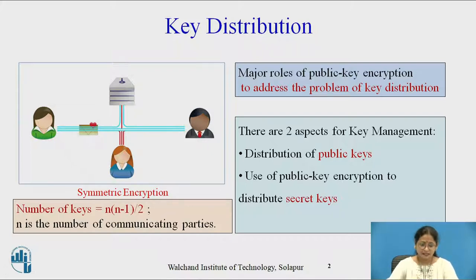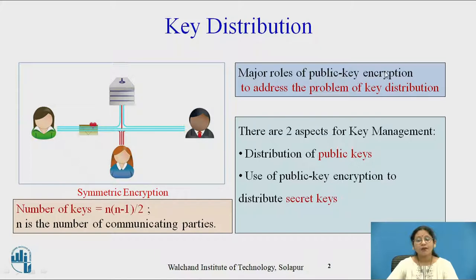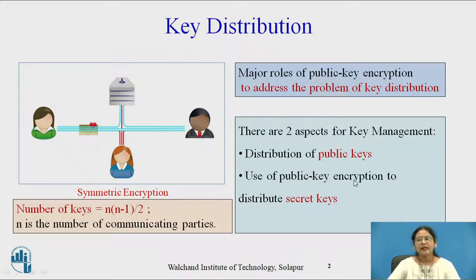Another problem is the large number of key pairs needed between communicating parties — that is n×(n−1)/2, where n is the number of communicating parties. One of the major roles of public key encryption has been to address the problem of key distribution. There are two aspects for key management distribution: distribution of public keys, and use of public key encryption to distribute secret keys.